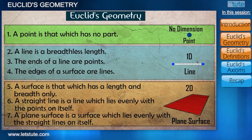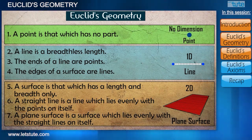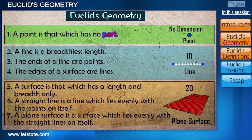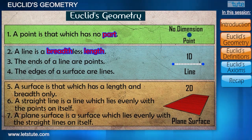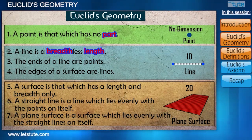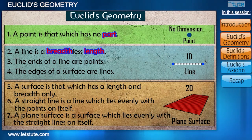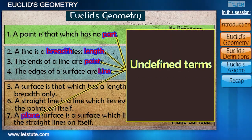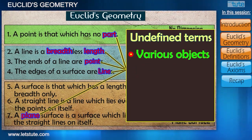Even though everything looks simple, certain terms in the definitions need further explanation. In the first definition, what exactly does 'part' mean? In the second, we need definitions for 'breadth' and 'length.' If we continue this process of defining terms, we may never be able to stop. So mathematicians decided to leave certain terms undefined. The terms point, line, and plane are undefined terms in geometry. We can represent these things intuitively or explain them with various objects or physical models.